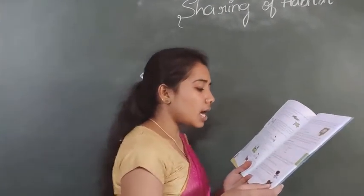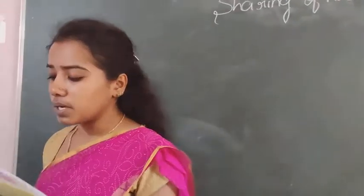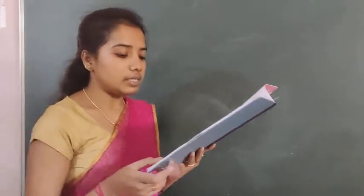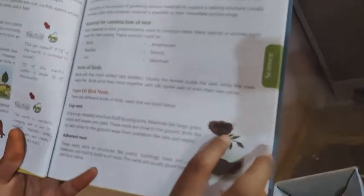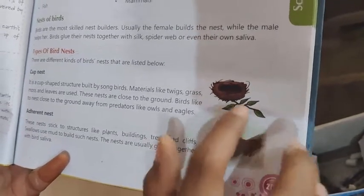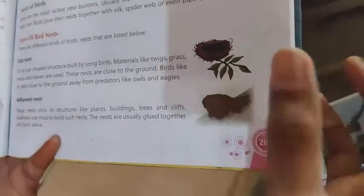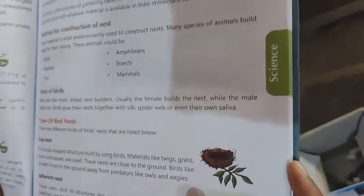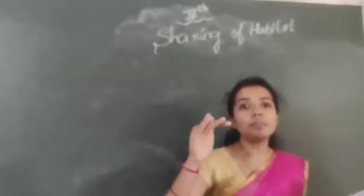There are different kinds of bird nests. The cup nest is a cup-shaped structure built by songbirds using materials like twigs, grass, moss, and leaves. These nests are close to the ground, away from predators like owls and eagles.